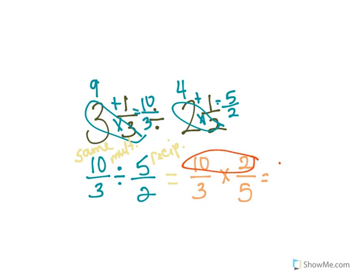So ten times two is twenty. Three times five is fifteen.